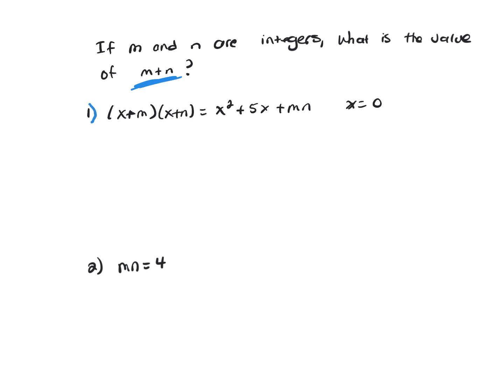I'm going to multiply the left-hand side. x times x is x squared. x times n is nx. m times x is mx plus m times n is mn. And we know that equals x squared plus 5x plus mn.